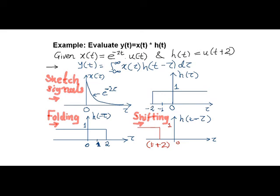Followed by that, in the next step, we perform folding operation over h of tau. Thus, this is a folded signal.